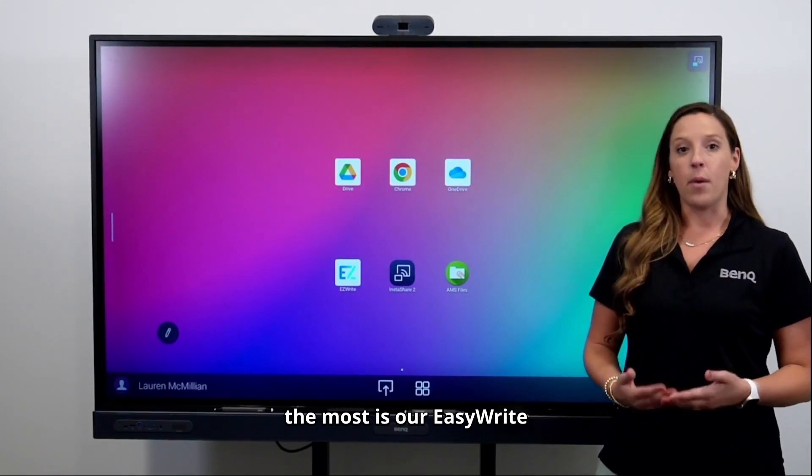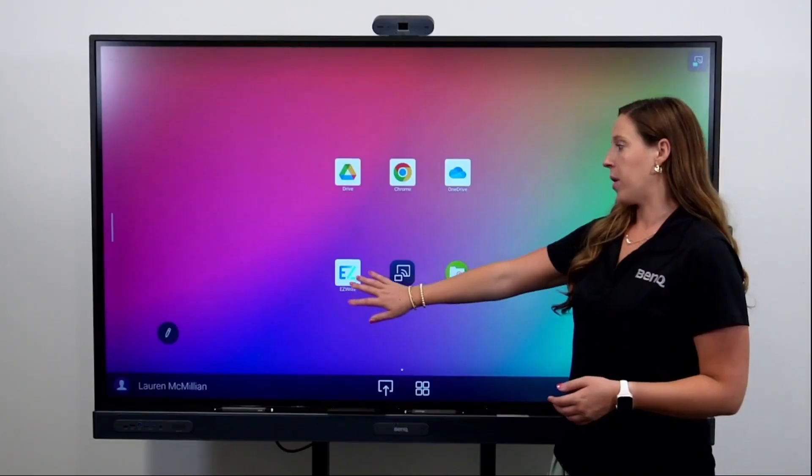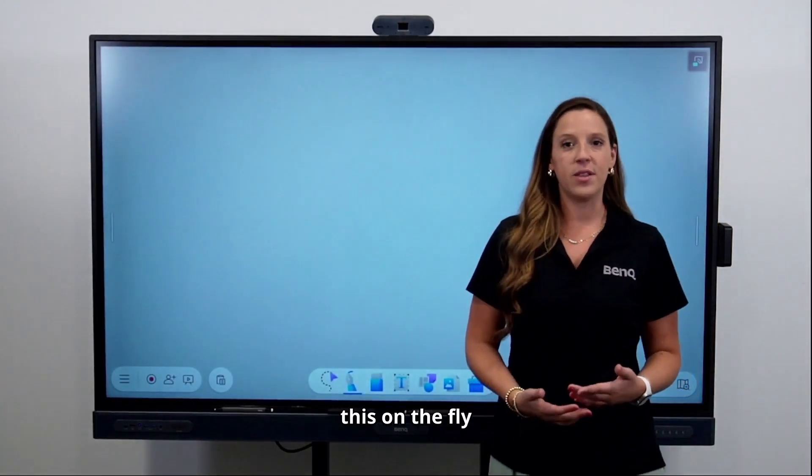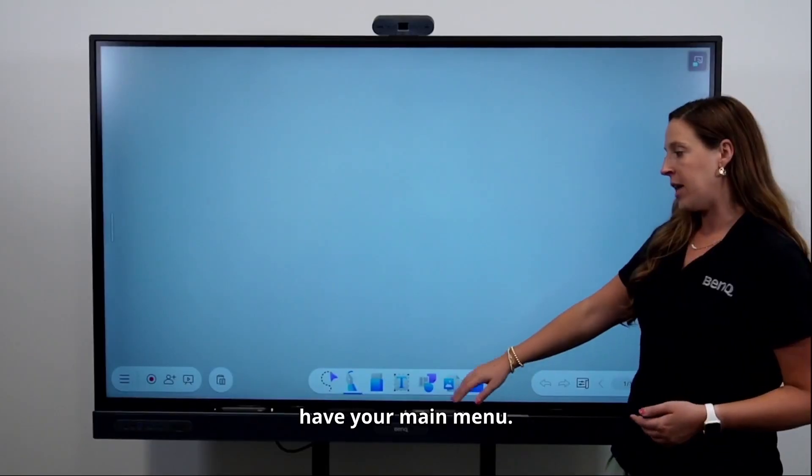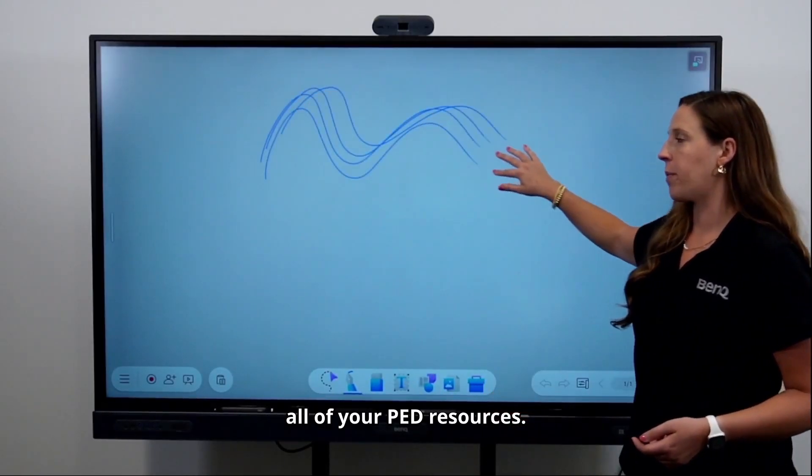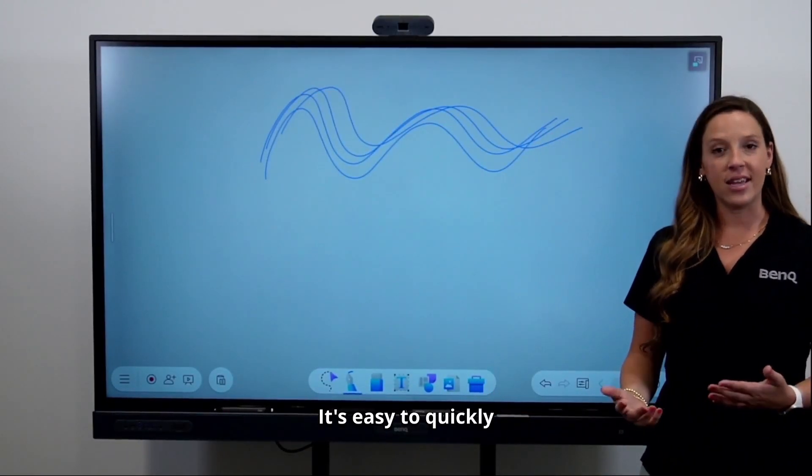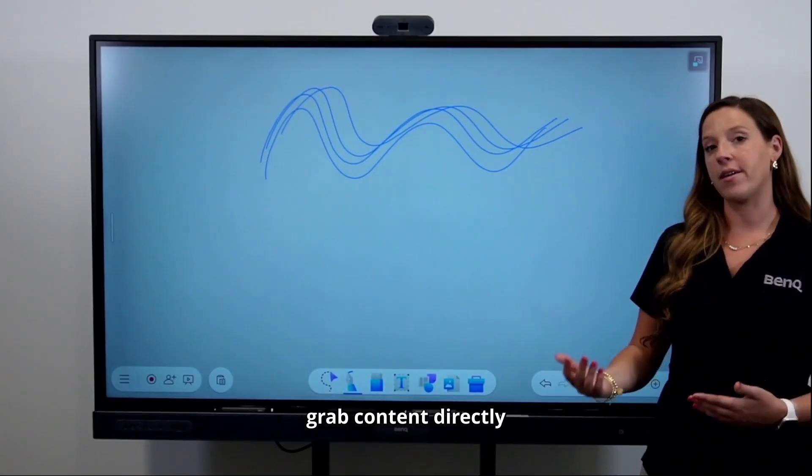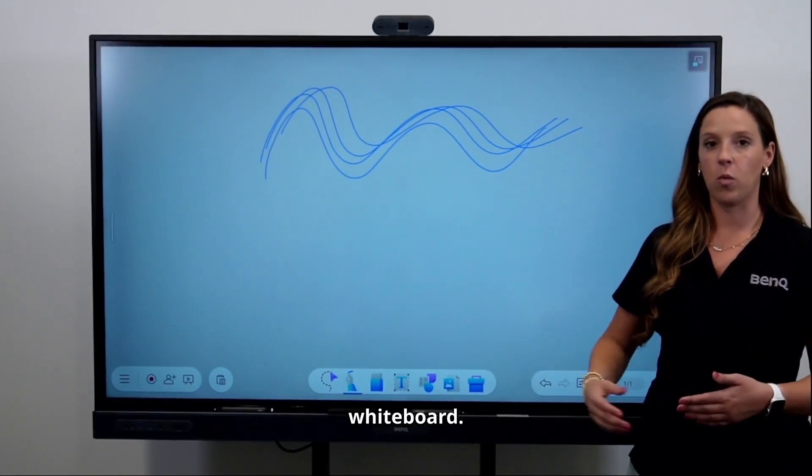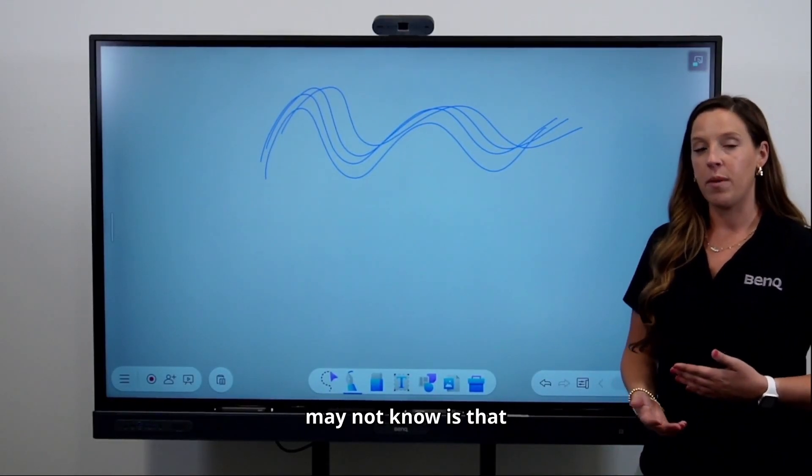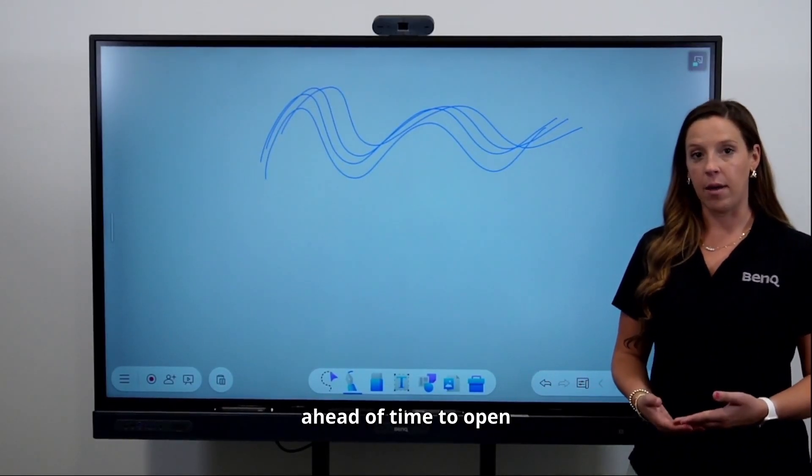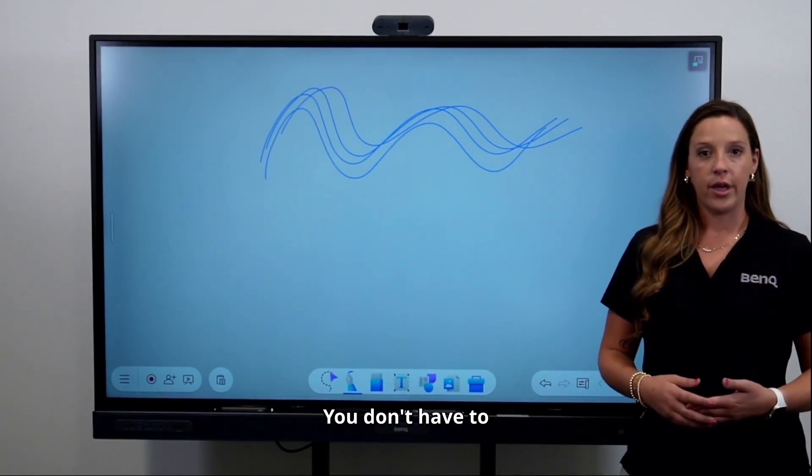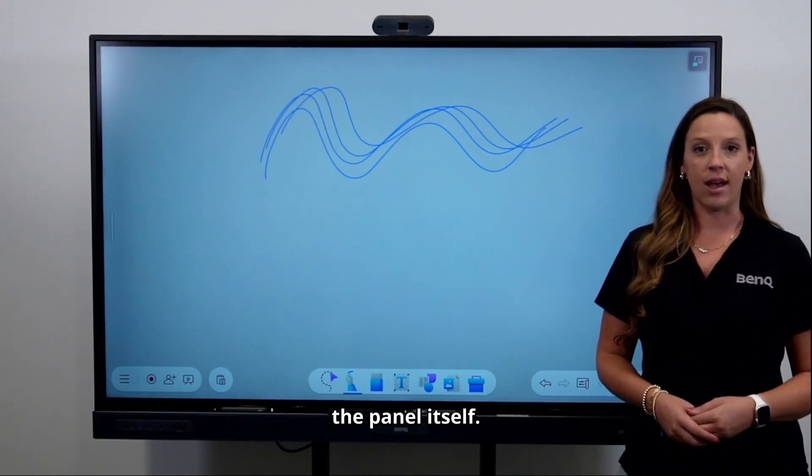One thing that is used the most is our EasyWrite digital whiteboard. You probably use this on the fly every single day. This is where you have your main menu and all of your pen resources. It's easy to quickly grab content from a Chrome browser and drop it in your whiteboard. But one thing you may not know is that you can actually create your EasyWrite lessons ahead of time to open them on the board. You don't have to create everything while standing at the panel itself.